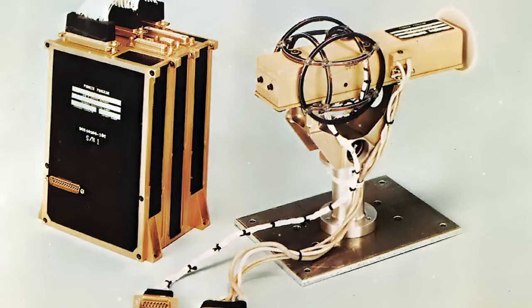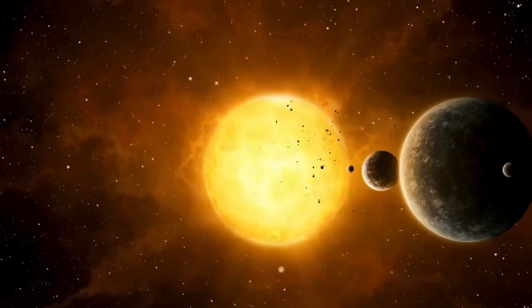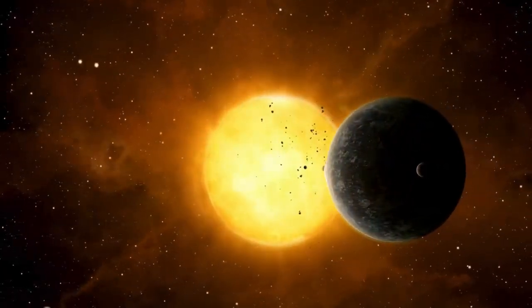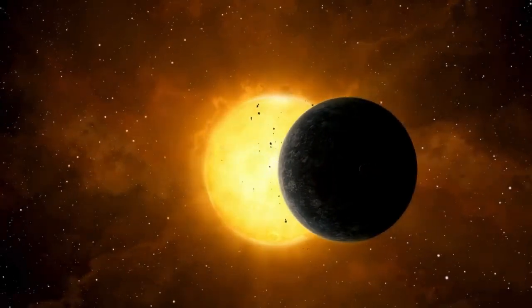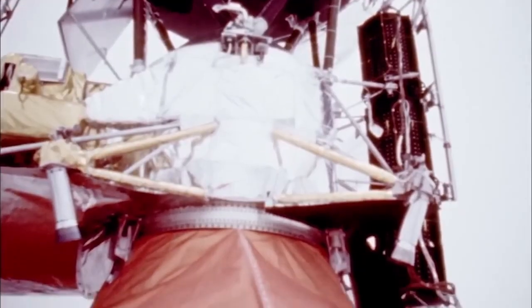How far will Voyager travel in a billion years? In a billion years, the Voyager probes will have journeyed far beyond the realms of the solar system into the vastness of interstellar space. By that time, Voyager 1 and 2 will be unrecognizable as they continue to drift, their instruments long silent due to their power sources running out.